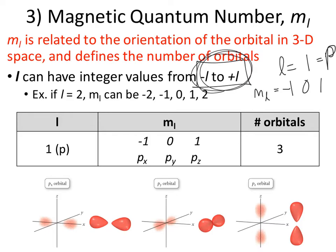So where are our three p orbitals? These show the orientation in 3D space — we're going to have one on the x-axis (px), one on the y-axis (py), and one on the z-axis (pz). Our l value of 1 defines the type of orbital — p, meaning that dumbbell shape. The m sub l gives you the orientation of those orbitals and shows how many there are. In this case, there are three values, three orientations, and so we have three individual orbitals.